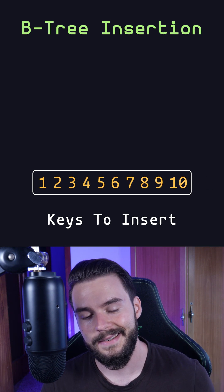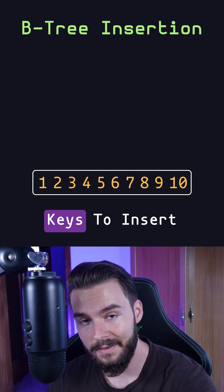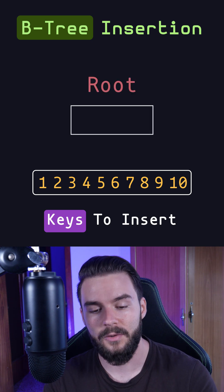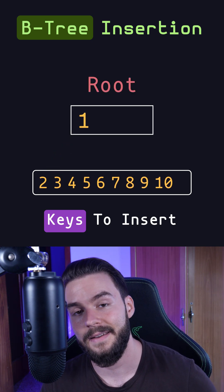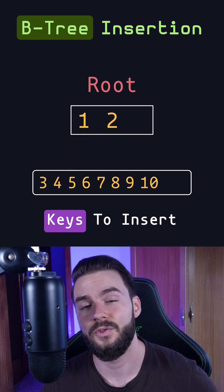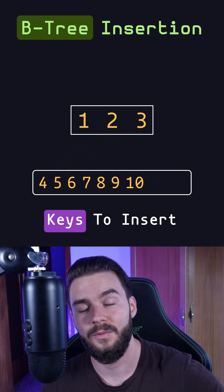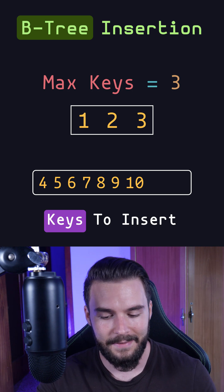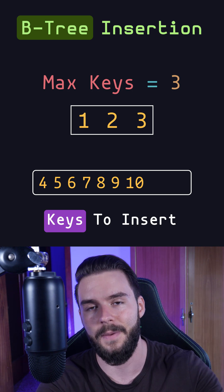Let's try to insert 10 keys in ascending order into the B-Tree and see what happens. First of all, we create the root node of the tree and we start inserting keys into that node in ascending order as if it was a sorted array, and we do that until we reach the maximum number of keys. Once that happens, further insertions will cause the tree to self-balance.